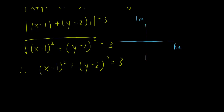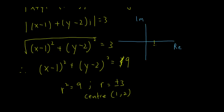Since r squared is 9, r equals 3. Our center is at 1 and 2 on the Argand diagram. From the center, the radius is 3, so counting out: here's 4 on one side and negative 2 on the other. That gives us our circle.